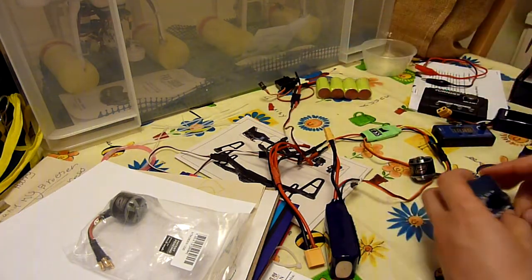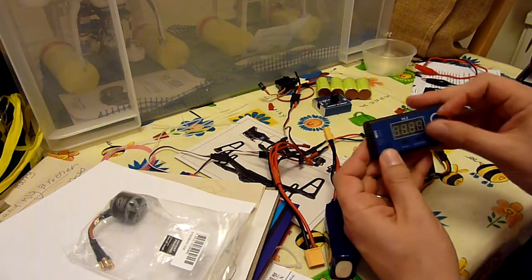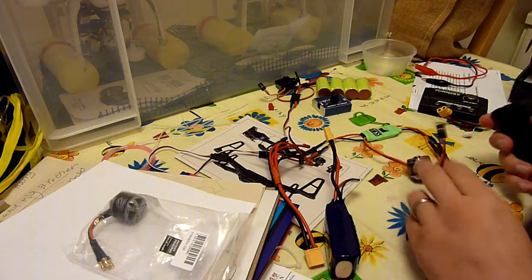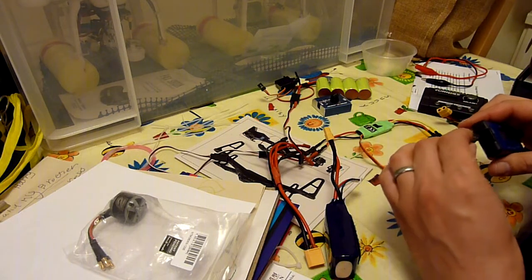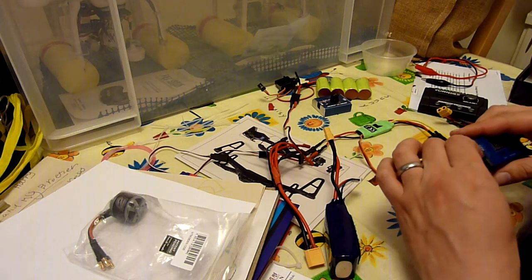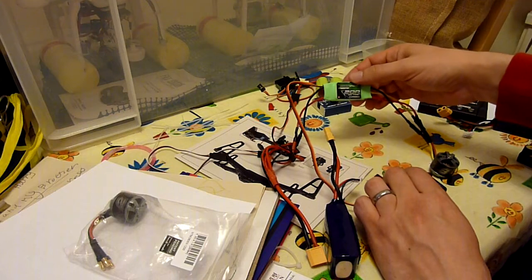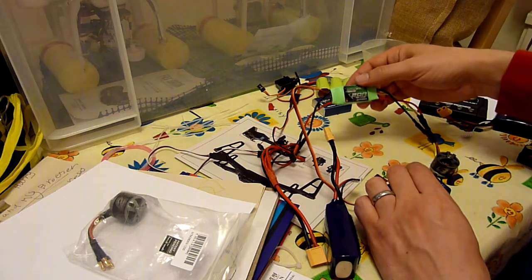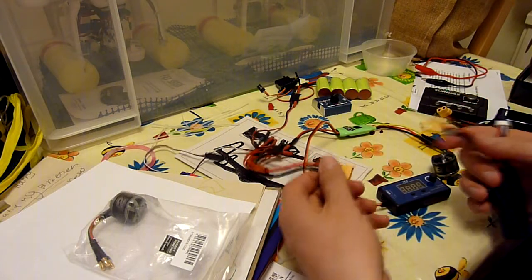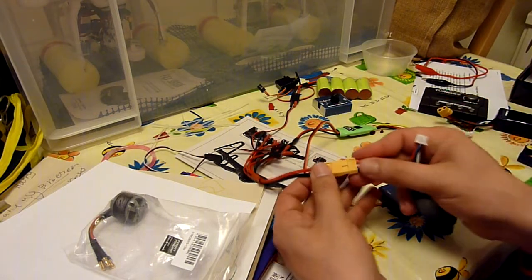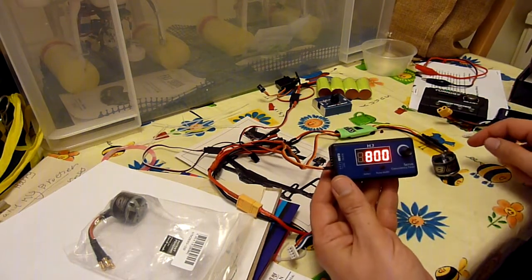The other thing I test with them is speed controllers. This is a different servo tester, a slightly posher one which has got the display of pulse width as you turn the dial. So if I put this on here, this is a Multistar speed controller that I've just flashed with SimonK firmware, so I just want to test it. This is just a motor I had lying around and a pack.